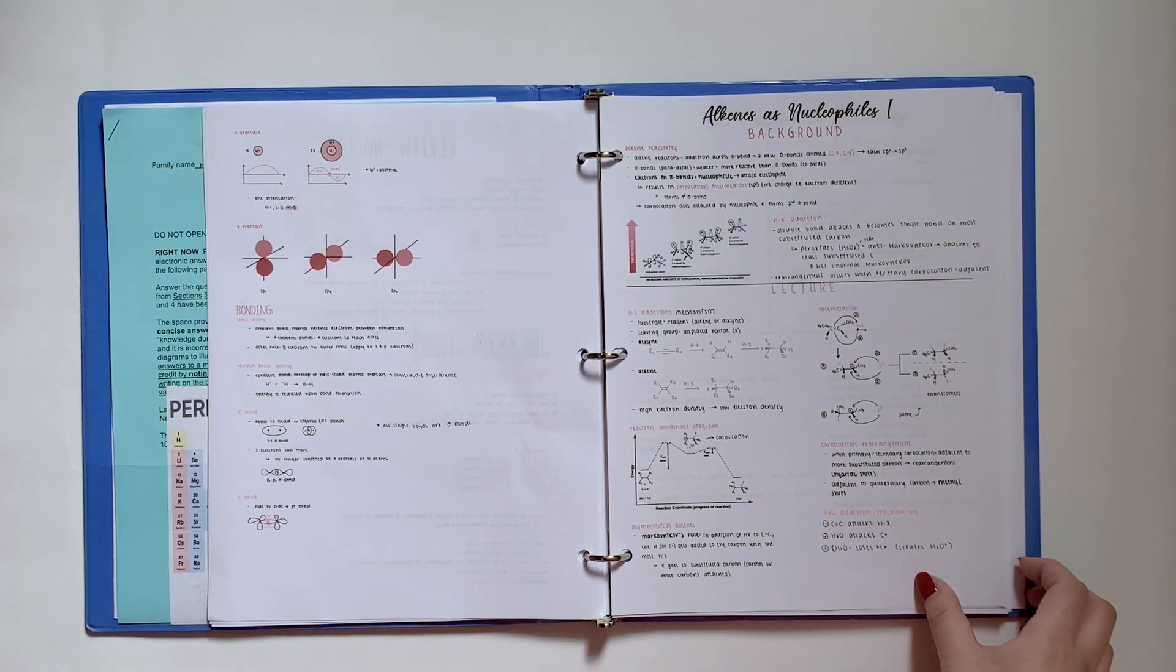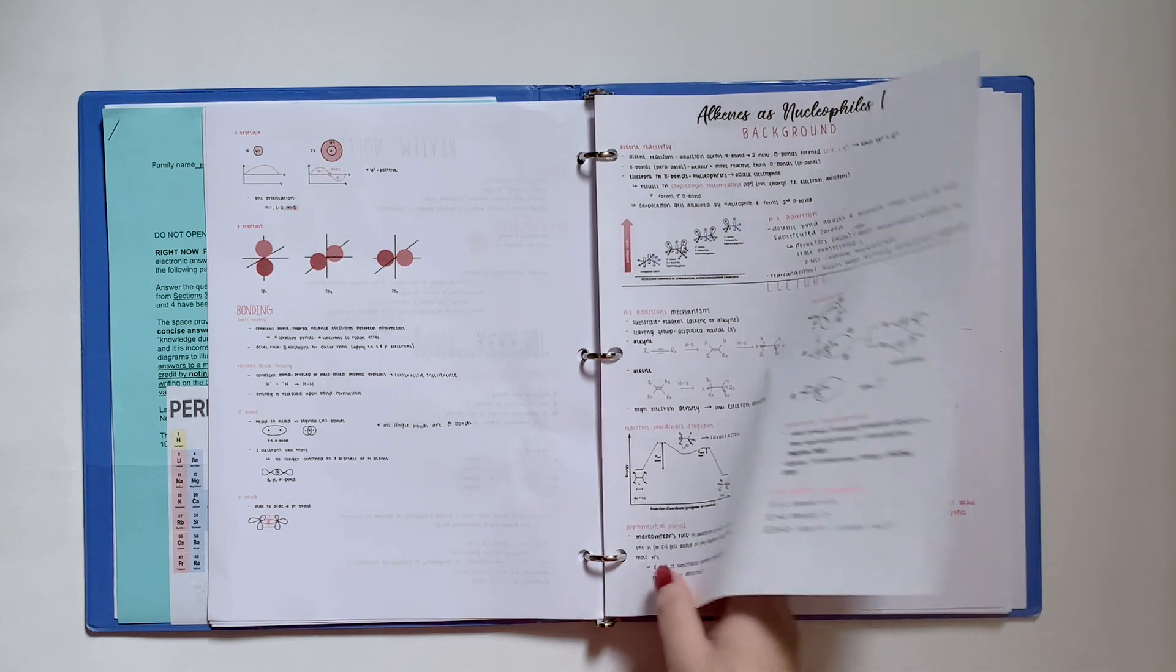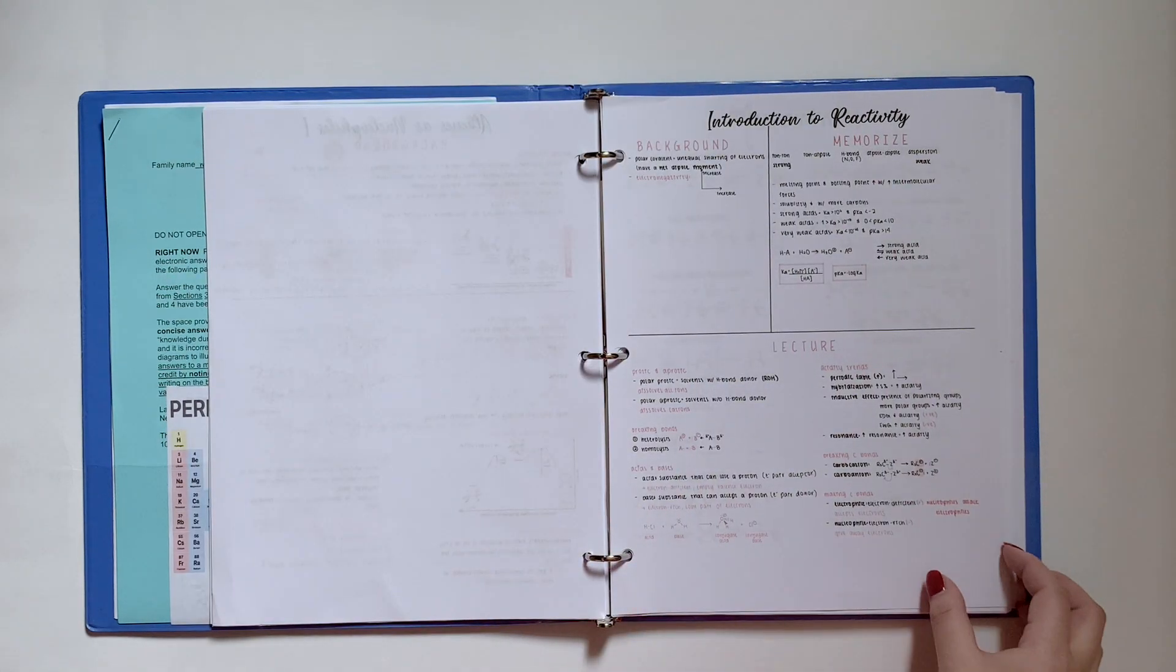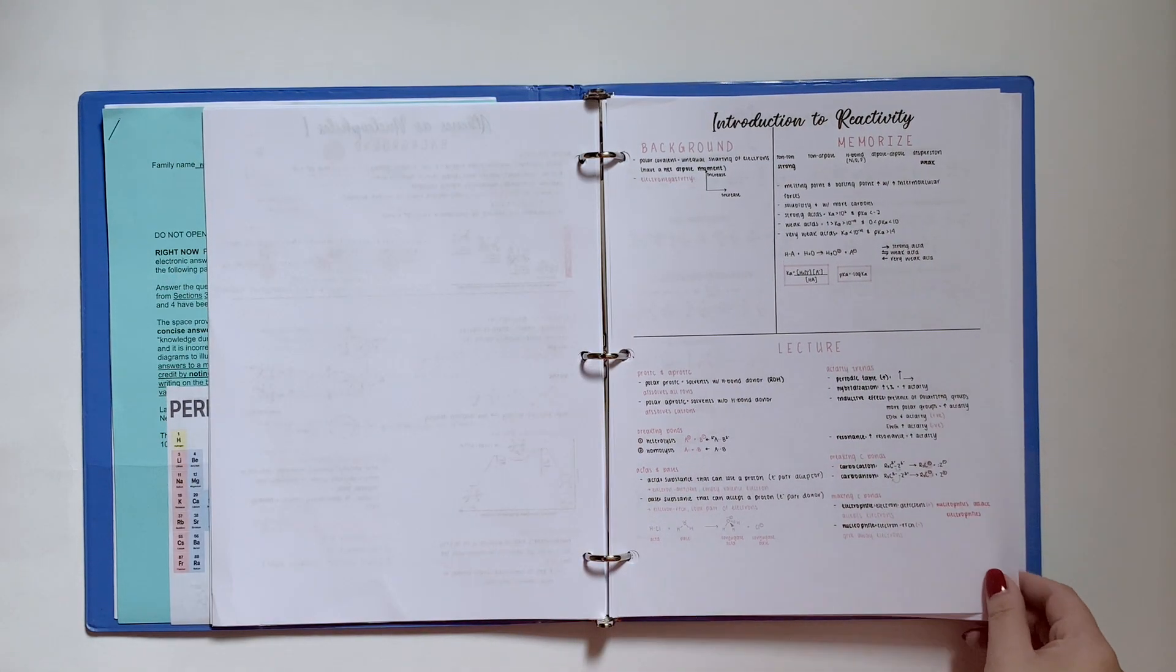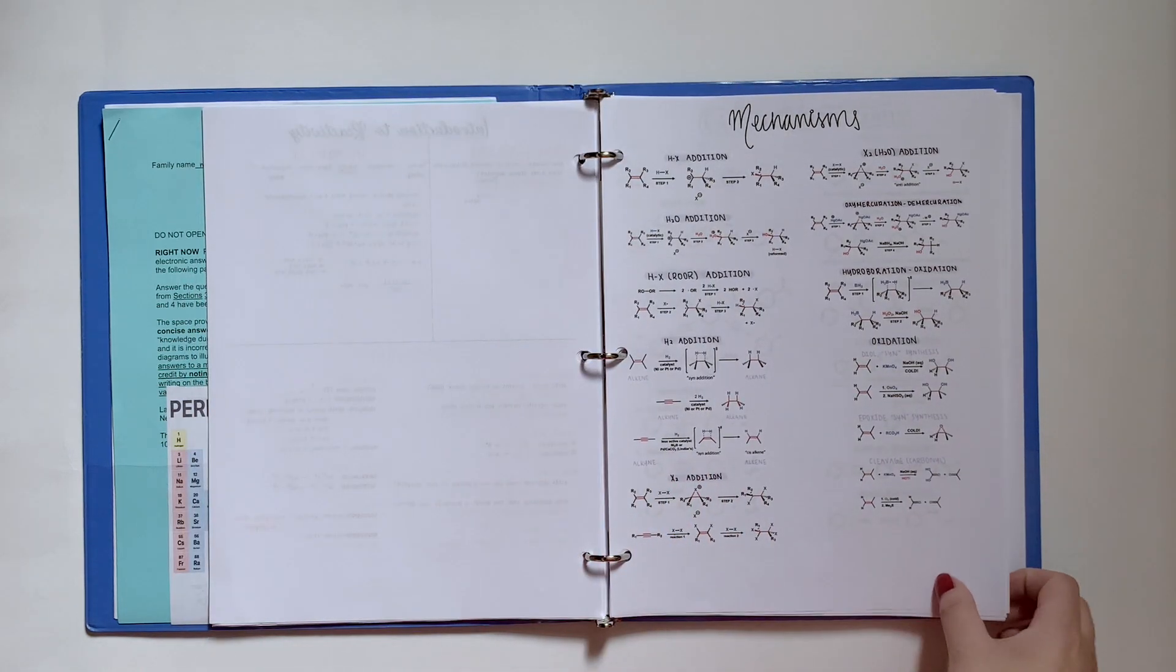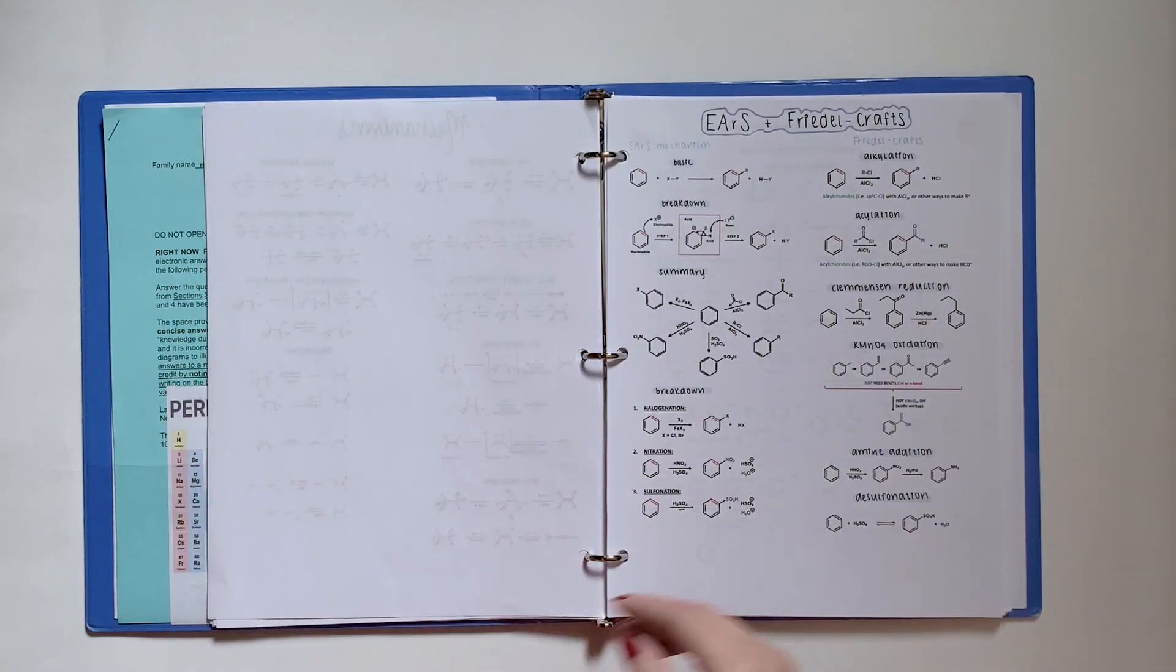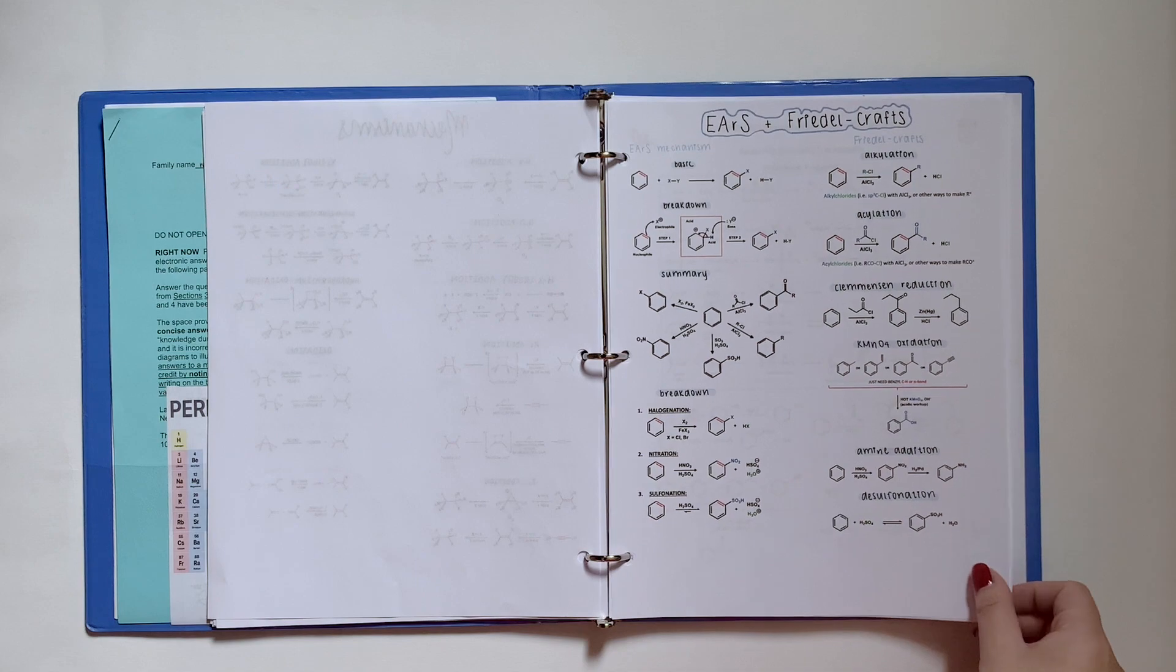Here's when I kind of gave up on organic chemistry notes, because it's more about memorization and practice for mechanisms. I just gave up on notes completely and copy-pasted the mechanisms that were in my teacher's lecture slides and summarized it onto one sheet.